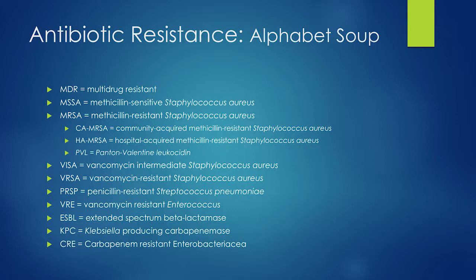Some common terms you'll encounter: MDR — multi-drug resistant; MSSA versus MRSA — methicillin-sensitive versus methicillin-resistant Staph aureus; VISA and VRSA — vancomycin-intermediate and vancomycin-resistant Staph aureus, not really in the United States yet but emerging overseas; drug-resistant Strep pneumo; VRE — vancomycin-resistant Enterococcus; KPC — Klebsiella-producing carbapenemase; and CRE — carbapenem-resistant Enterobacteriaceae.